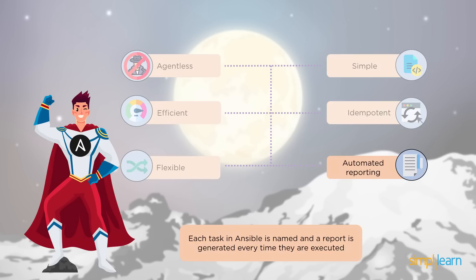Idempotent basically means that if you have a playbook which needs to be run on any number of systems, it would have the same effect on all of these systems without any side effect. And finally we have automated reporting. In the case of Ansible, your playbook has a number of tasks and all these tasks are named. So whenever you run or execute your playbook, it gives a report on which tasks ran successfully, which failed, which clients were not reachable and so on. All this information is very crucial when you are dealing with a very large infrastructure.